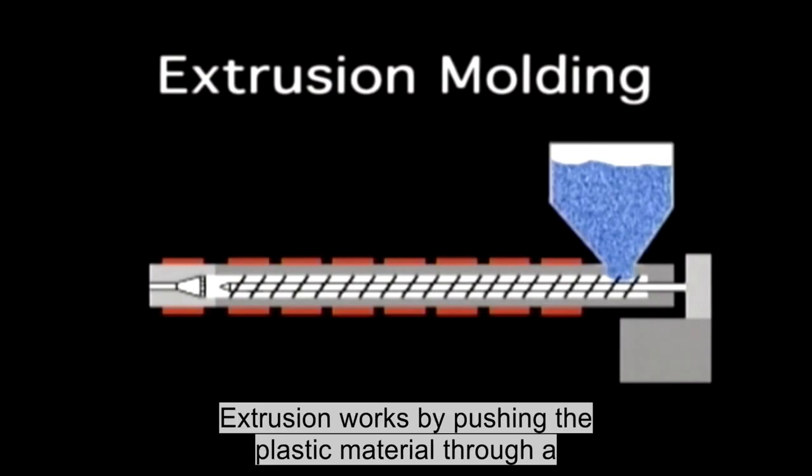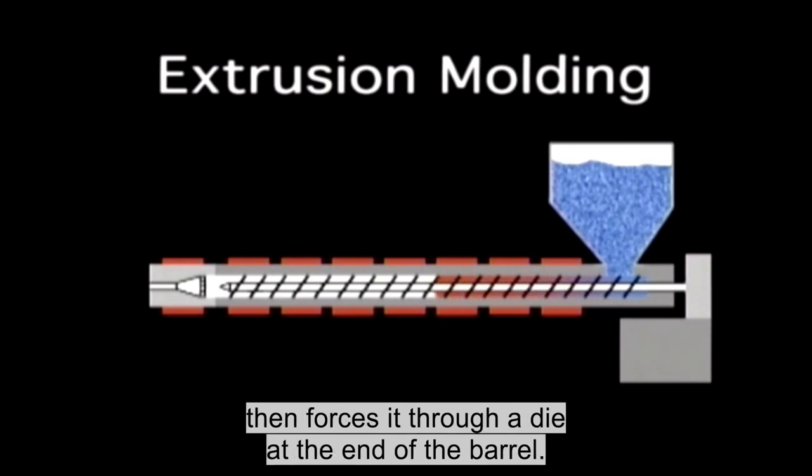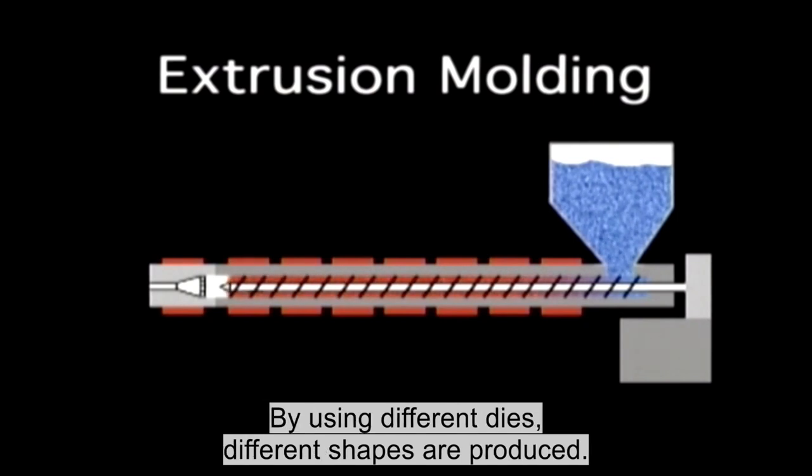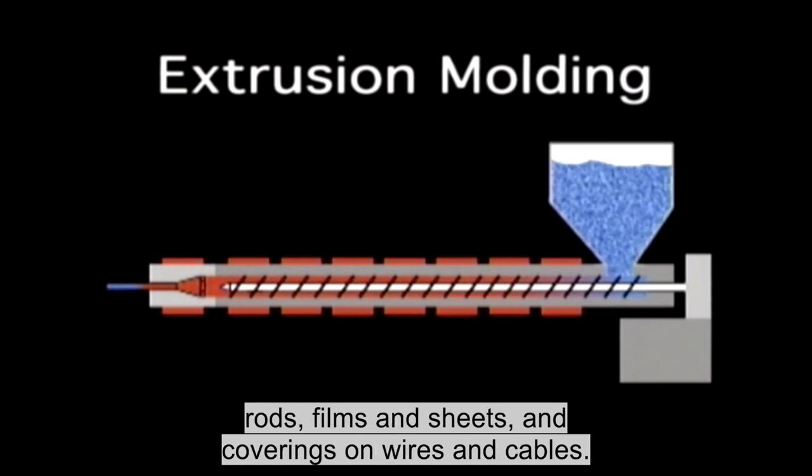Extrusion works by pushing the plastic material through a heated barrel, which heats, melts and mixes the plastic, then forces it through a die at the end of the barrel. By using different dies, different shapes are produced. The three main shapes are profiles such as tube and rods, films and sheets, and coverings on wires and cables.